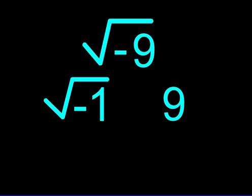To find the square root of negative 9, we have to realize the negative sign indicates there is a negative 1 hiding in front of the 9. Our problem now reads the square root of negative 1 times the square root of 9.